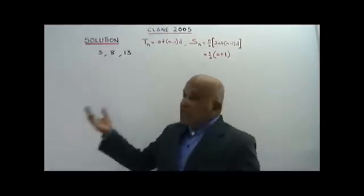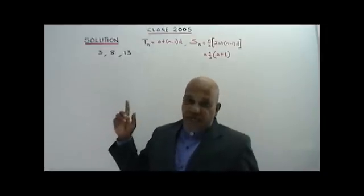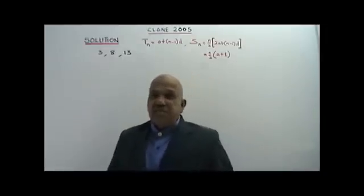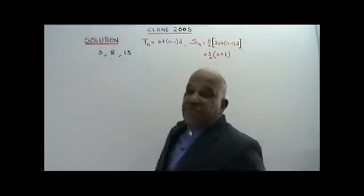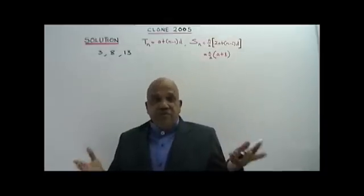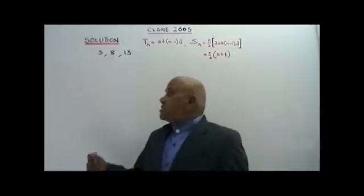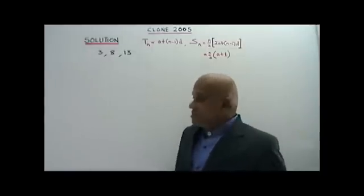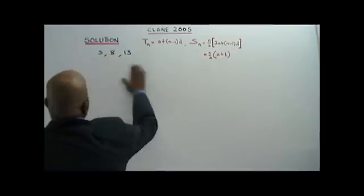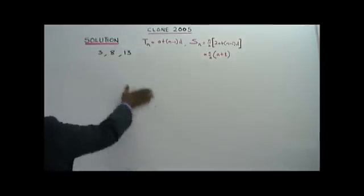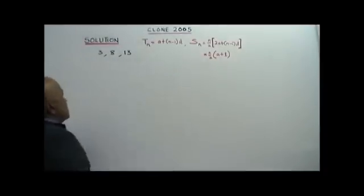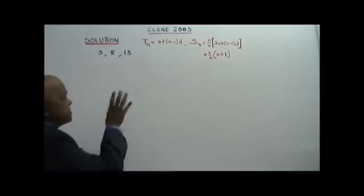The first question we have today is a clone question based on the year 2005. You are given the first three terms of an Arithmetic Progression: 3, 8, 13. These are the first three terms.